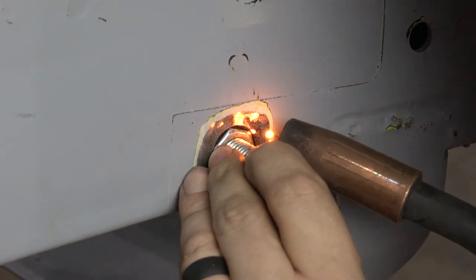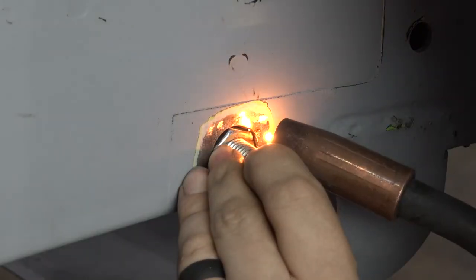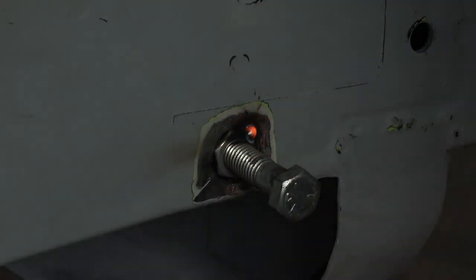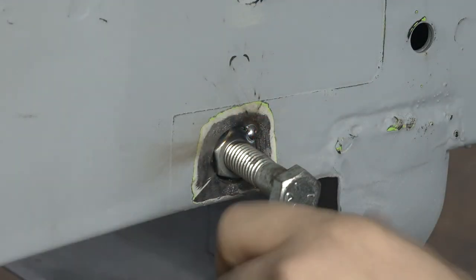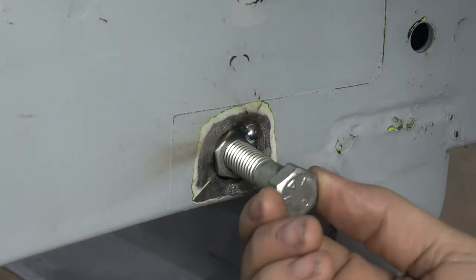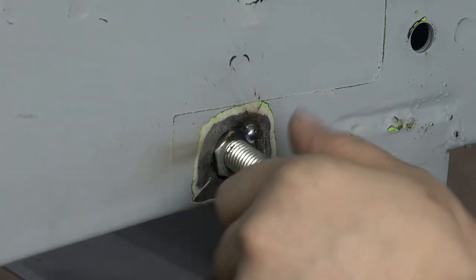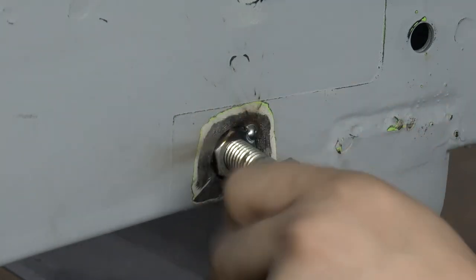Then you want to proceed to tack weld the nut inside the frame. Leaving the bolt on there will allow you to make adjustments so that when you go tack the other side, it will be square.